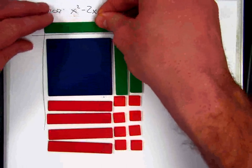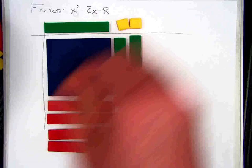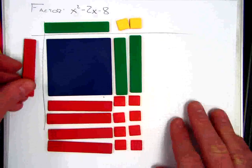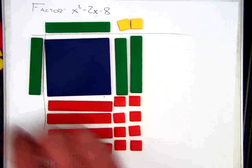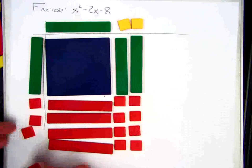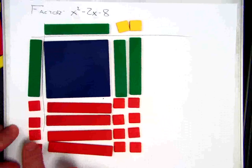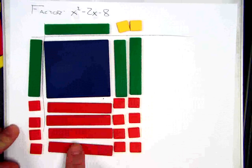I know that my factor on top is going to be x plus 2, and my factor on the left side is going to be x and then a minus 4 down here. And I know that these are negatives because they have to multiply with that positive tile right there to make negatives here.